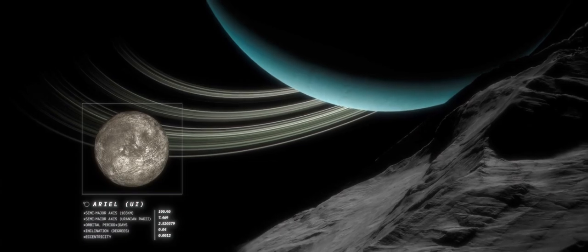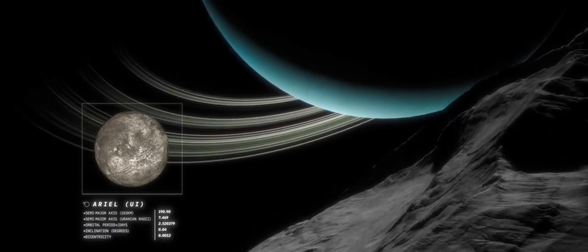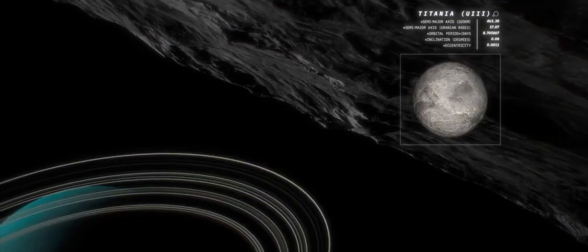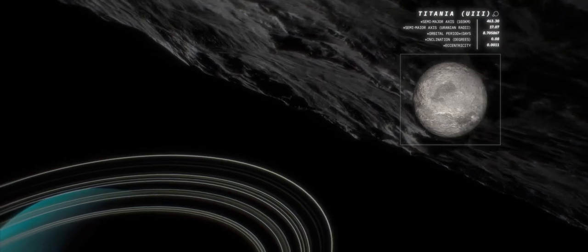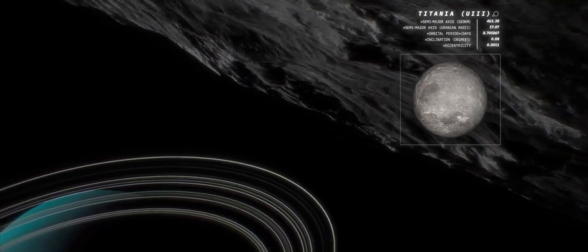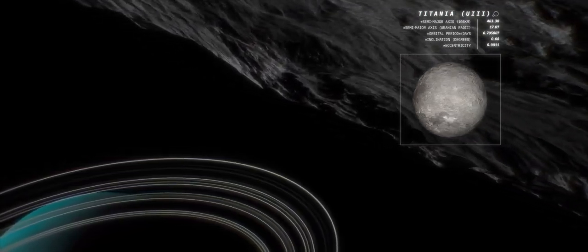Ariel appears to have the youngest surface, with few impact craters. While Titania has a very old surface, the lack of large craters and presence of a large canyon system may indicate ancient resurfacing.